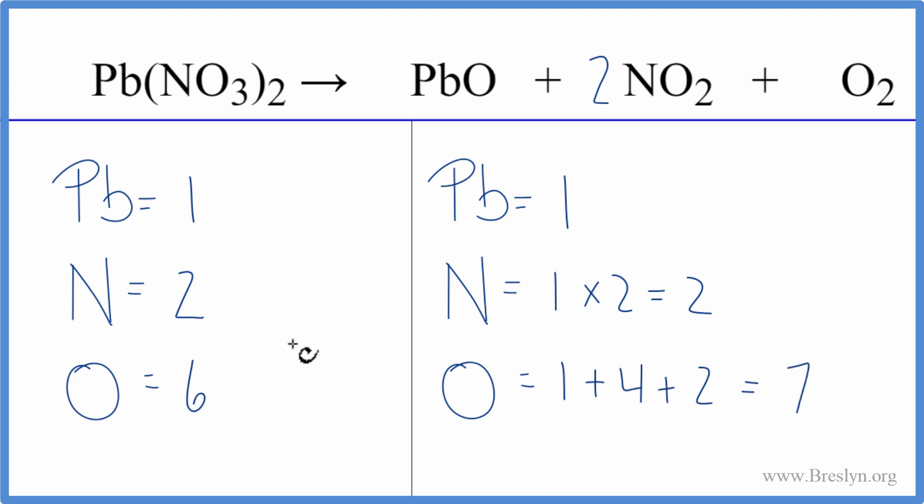So we're almost balanced here, we just have a difference of one, but we have to fix that. At this point, I think I'll double the lead to nitrate because I have fewer oxygens here than on the product side, so I'm going to have to do something. So I'm going to double it and then see how that works out.